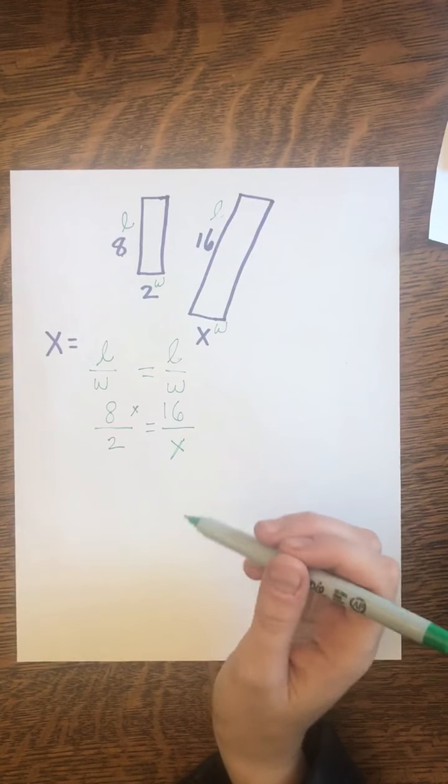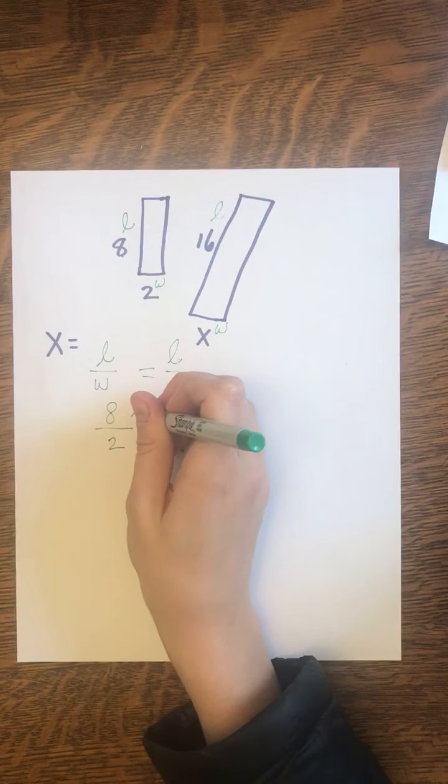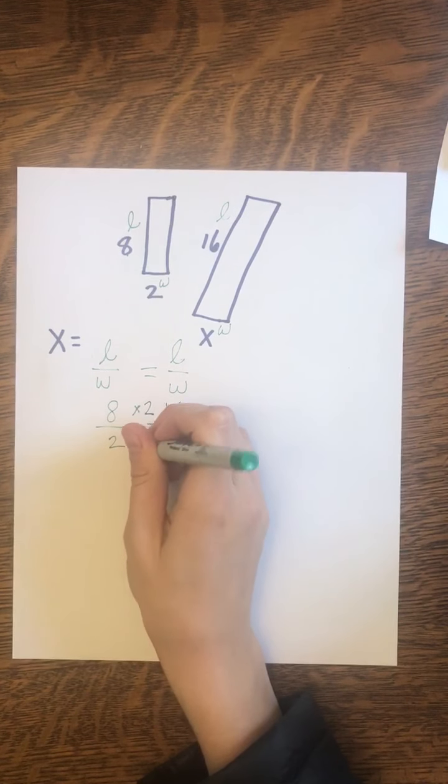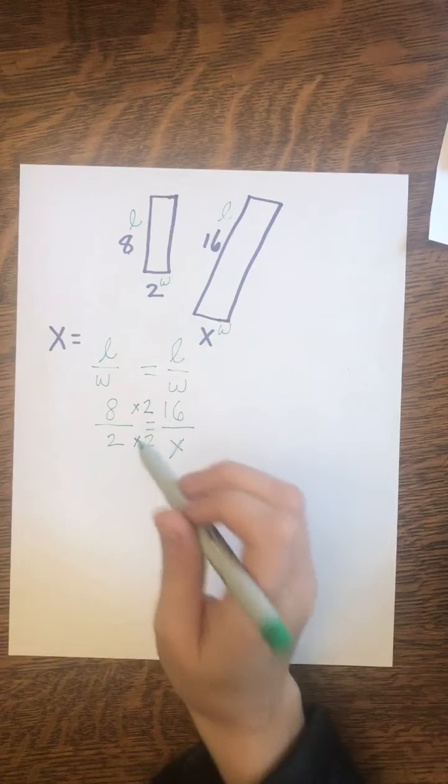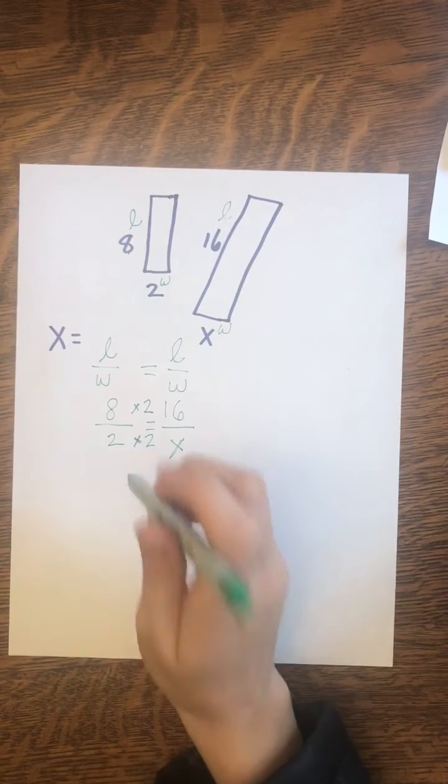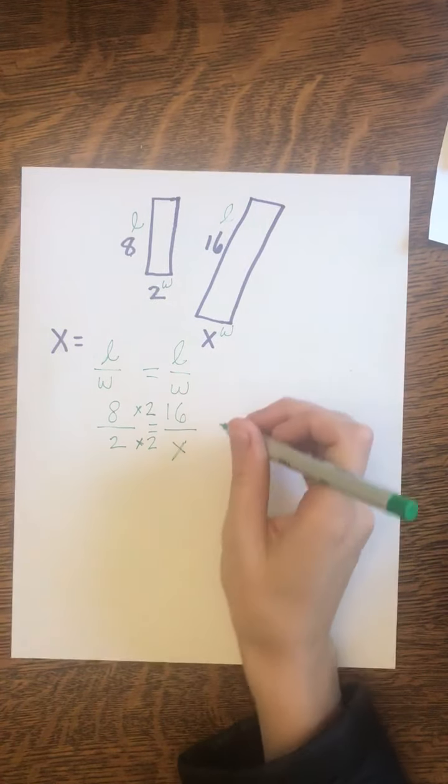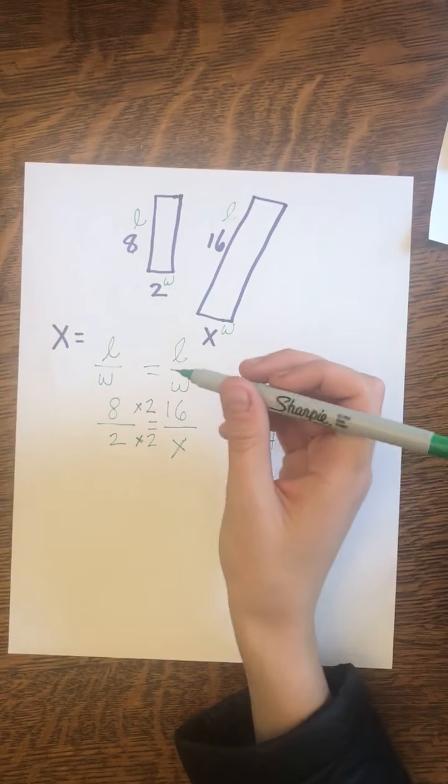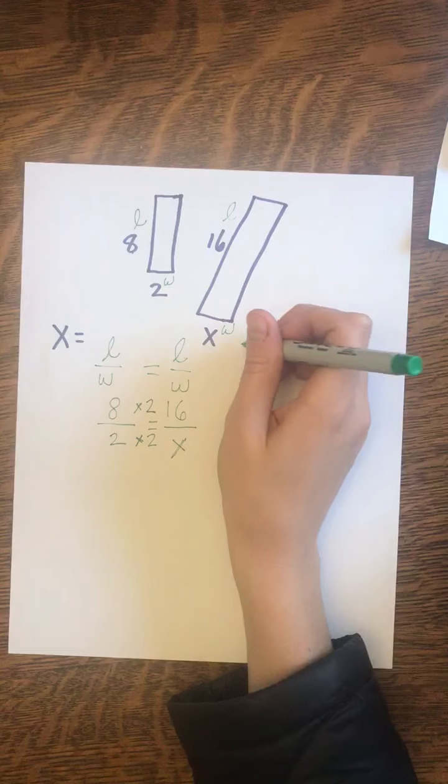8 times what is 16? Well, 8 times 2. So if I'm multiplying the numerator by 2, I'm going to multiply the denominator by 2. So 8 times 2 is 16. 2 times 2 is 4. So then I get X equal to 4. So the width of my larger rectangle is 4.